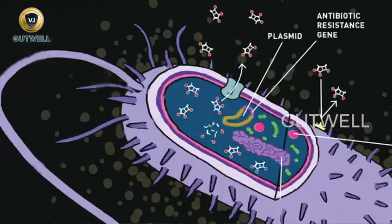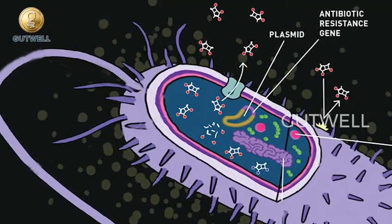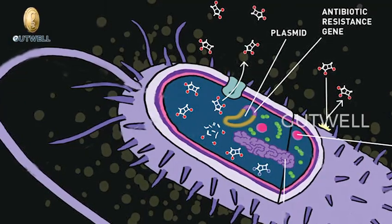Let me explain how a bacteria becomes a superbug. When an antibiotic is not able to kill or arrest the multiplication of a bacteria, we say that this bacteria has developed resistance to that antibiotic. Here, the term resistance is specific to a bacteria in relation to an antibiotic which has become ineffective.